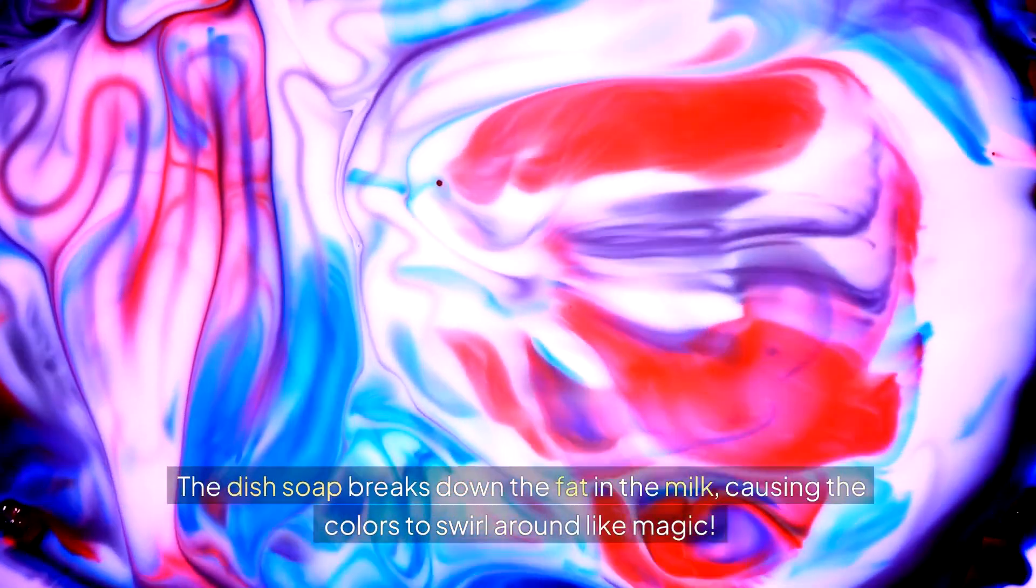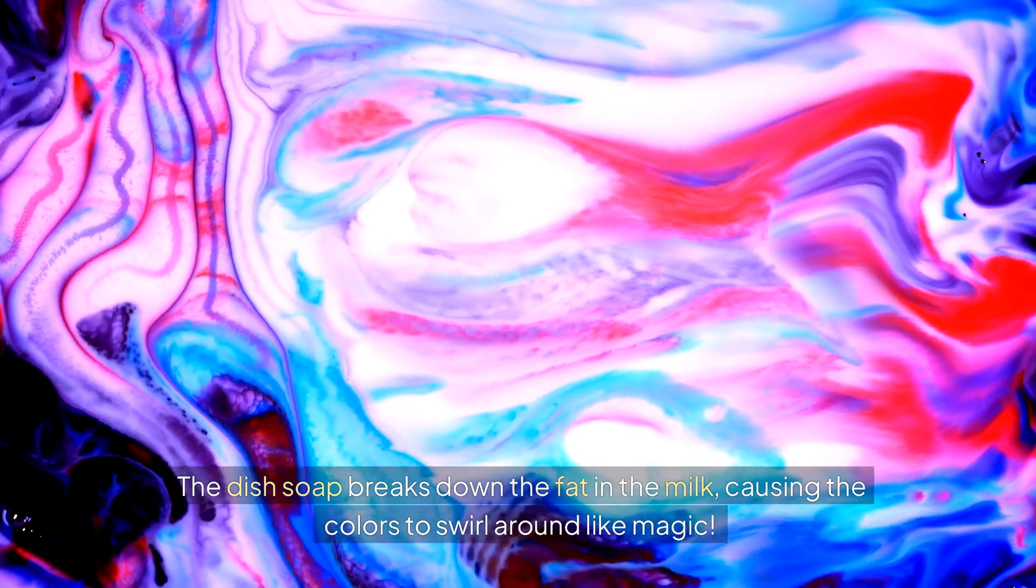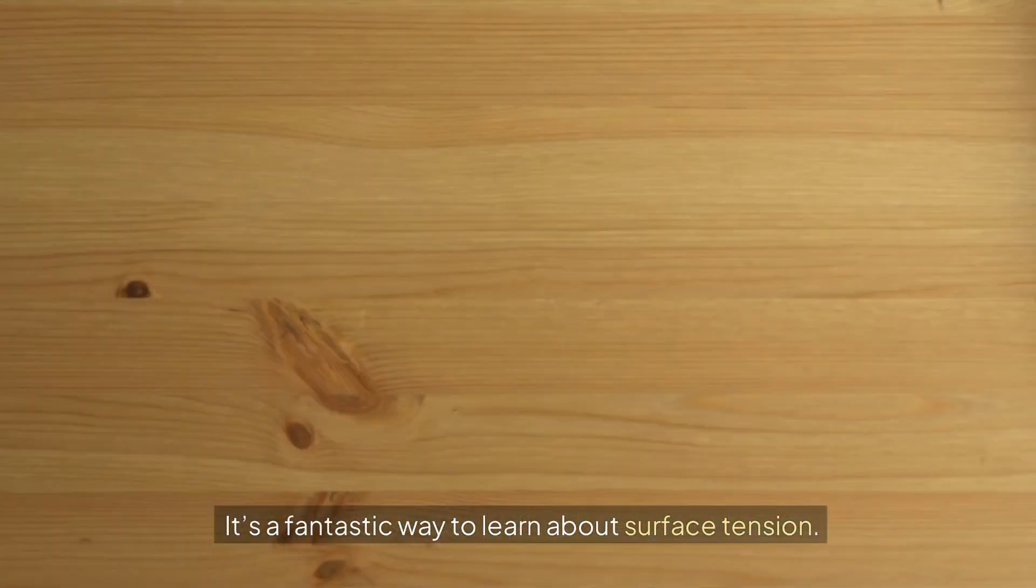Explanation: The dish soap breaks down the fat in the milk, causing the colors to swirl around like magic. It's a fantastic way to learn about surface tension.